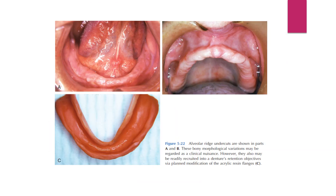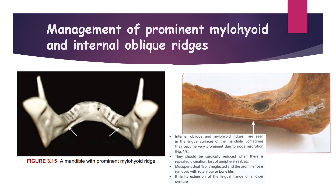The alveolar ridge undercuts are shown in parts A and B. These bony morphological variations may be regarded as a clinical nuisance; however, they may also be recruited into a denture's retention objectives via planned modification of the acrylic resin flanges, as seen in figure C.